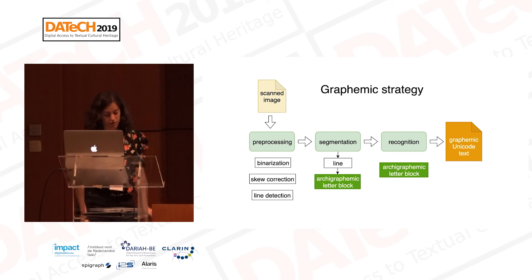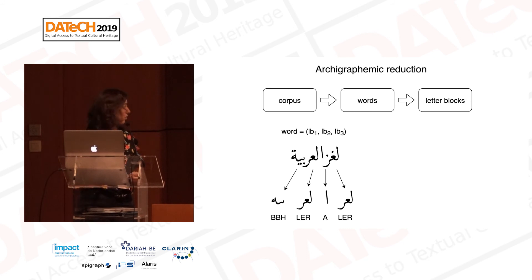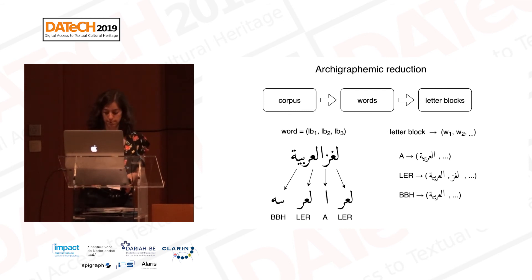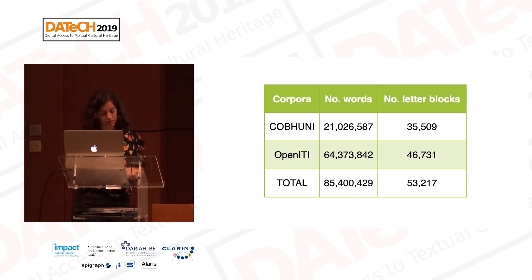For this, of course, we need to have an inventory of the letter blocks available in Arabic script. So we took a corpus of Arabic, split it into words, and reduced each word into archigraphemic letter blocks. Each word is basically a sequence of letter blocks. On the other hand, we built a mapping between each letter block and all its possible shapes with dots, within all words they can appear in. This can serve us later to recognize the dots. These are the numbers we got: we compiled a corpus of 85 million words in Arabic, and from it we got 53,000 letter blocks. We can now use this list of letter blocks to expand them into all their possible shapes and train an OCR system with this information.